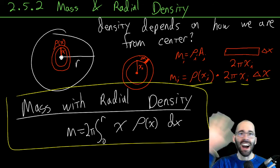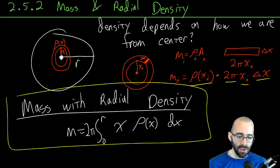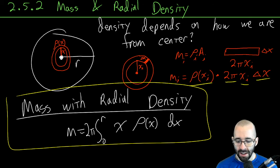They're not related at all, but it is kind of funny. It doesn't look like the washer method, it looks like the shell method, and it's not related to either one of them even though we do have washers here. That's how you find the mass of a two-dimensional object that has a radial density function.